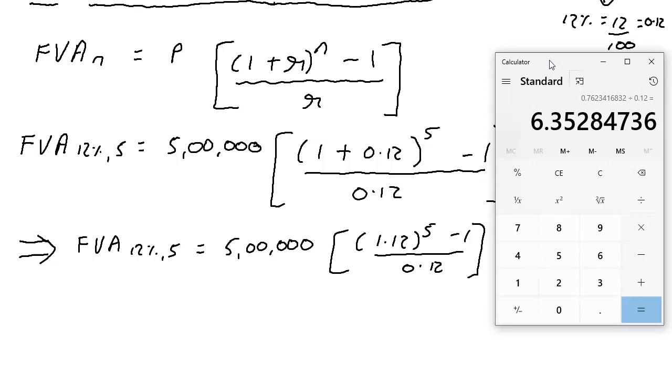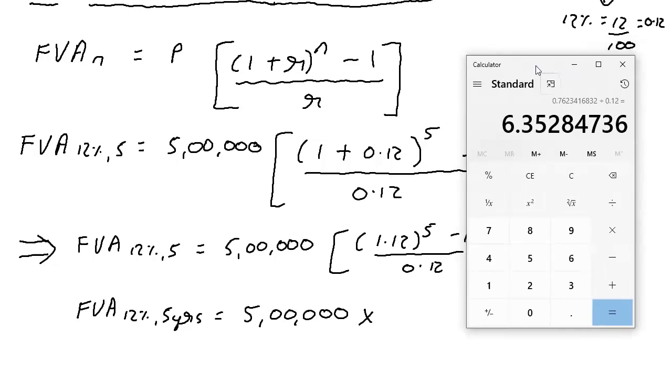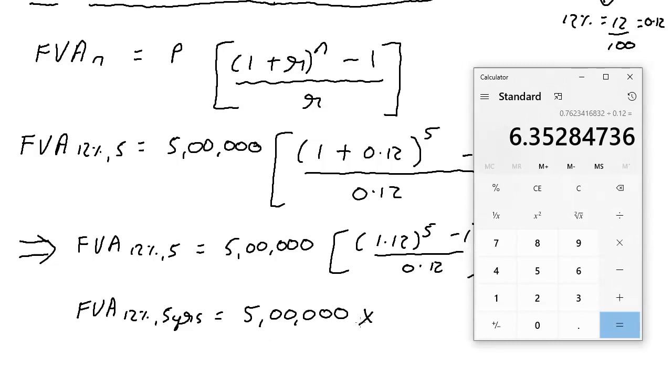And we have the future value annuity at 12 percent and 5 years. If you really want to put the virus, FVA is also enough. It's equal to 5 lakhs into 6.3528.